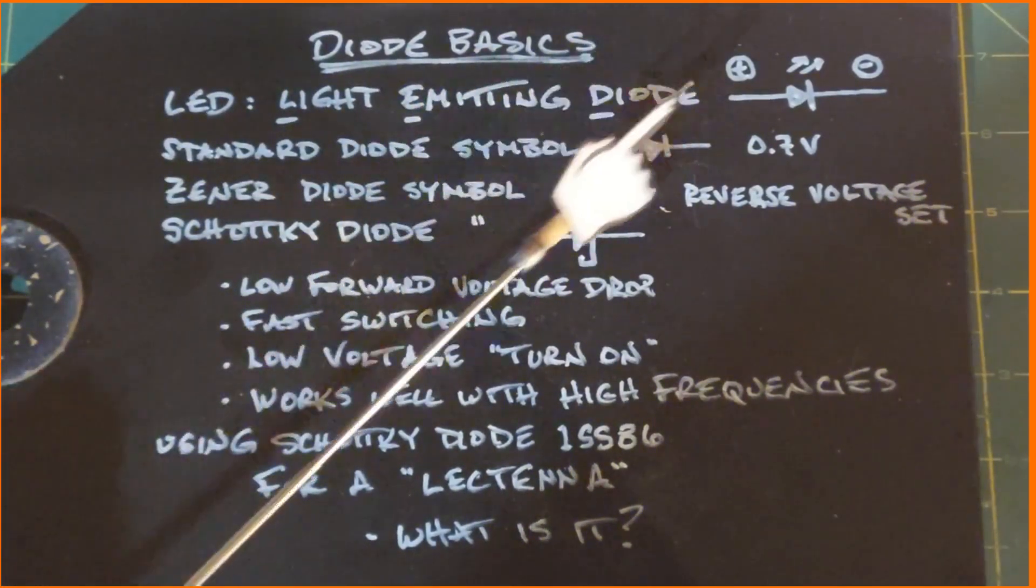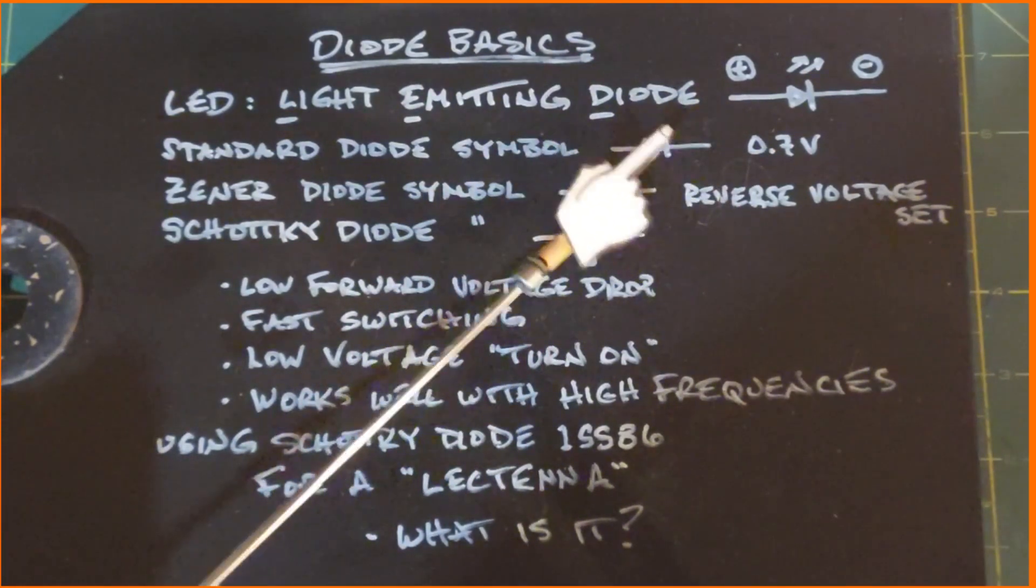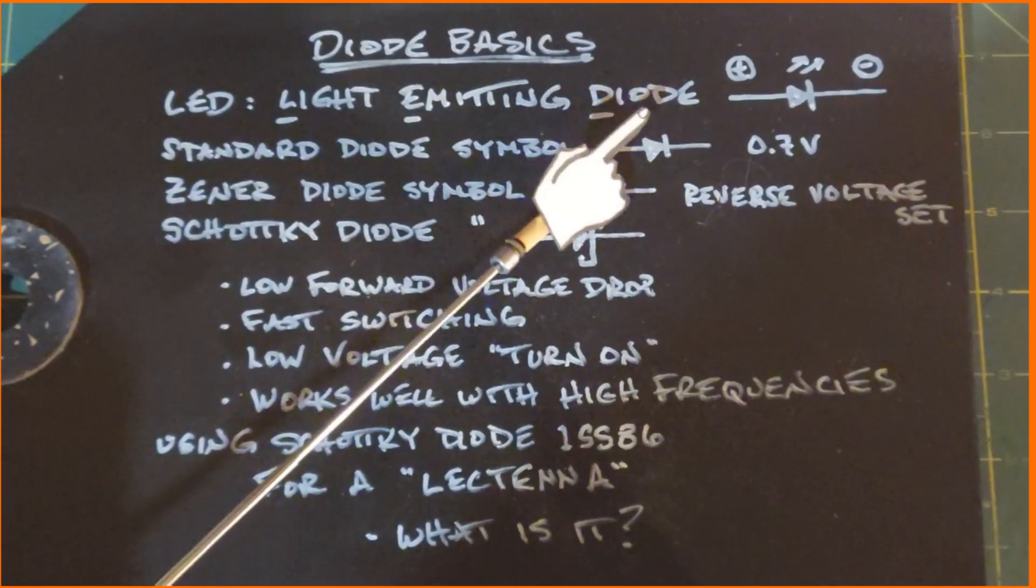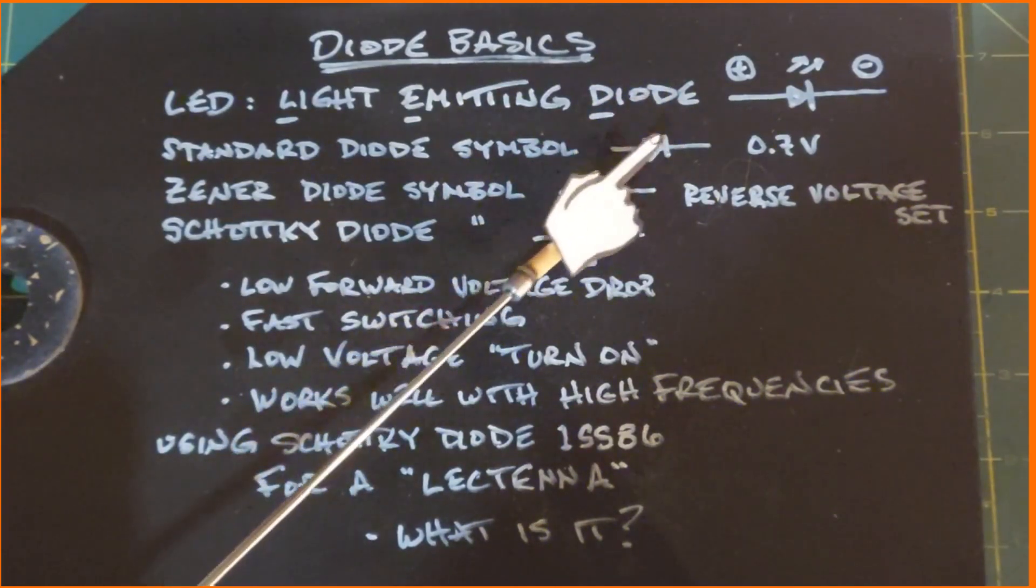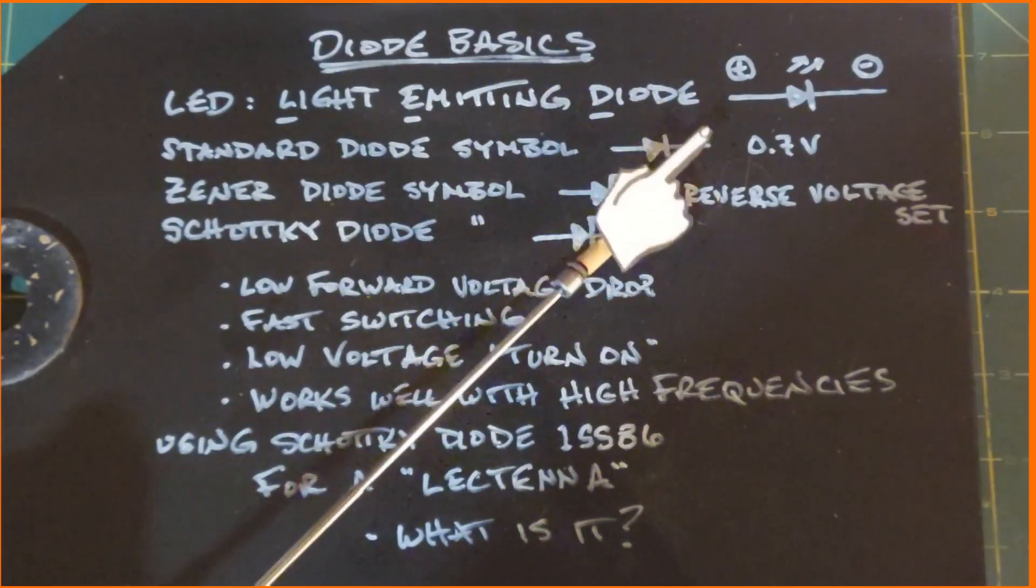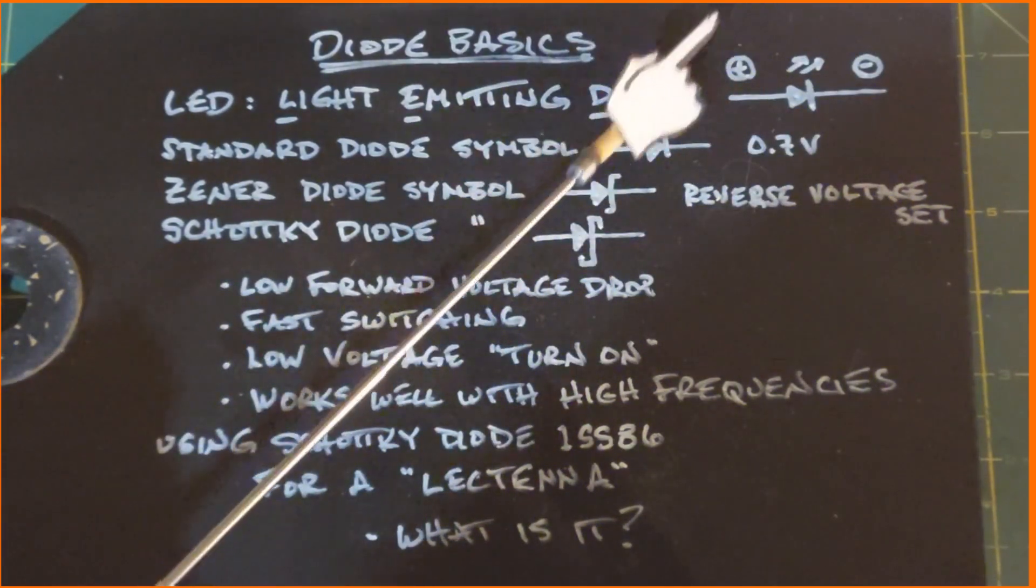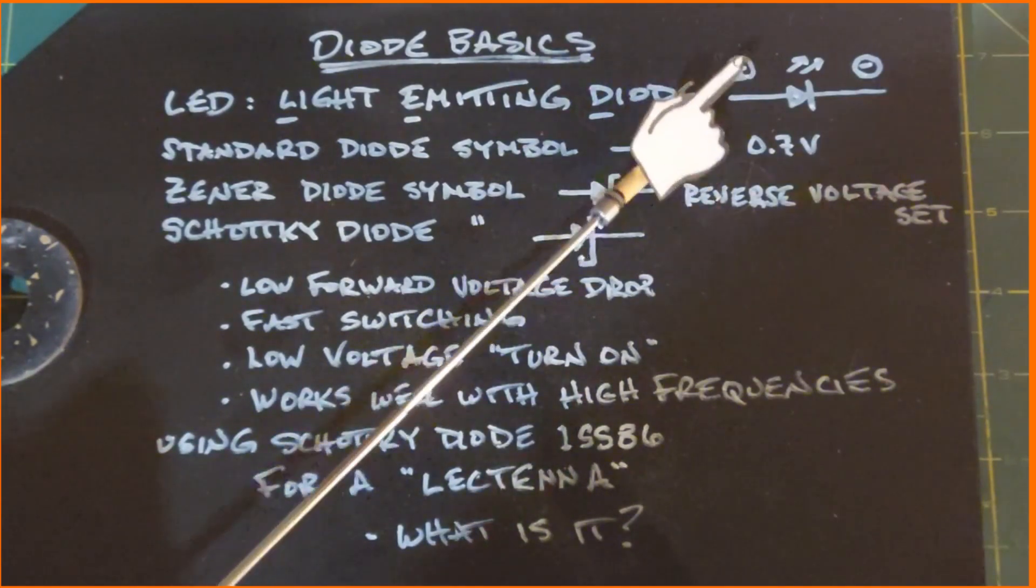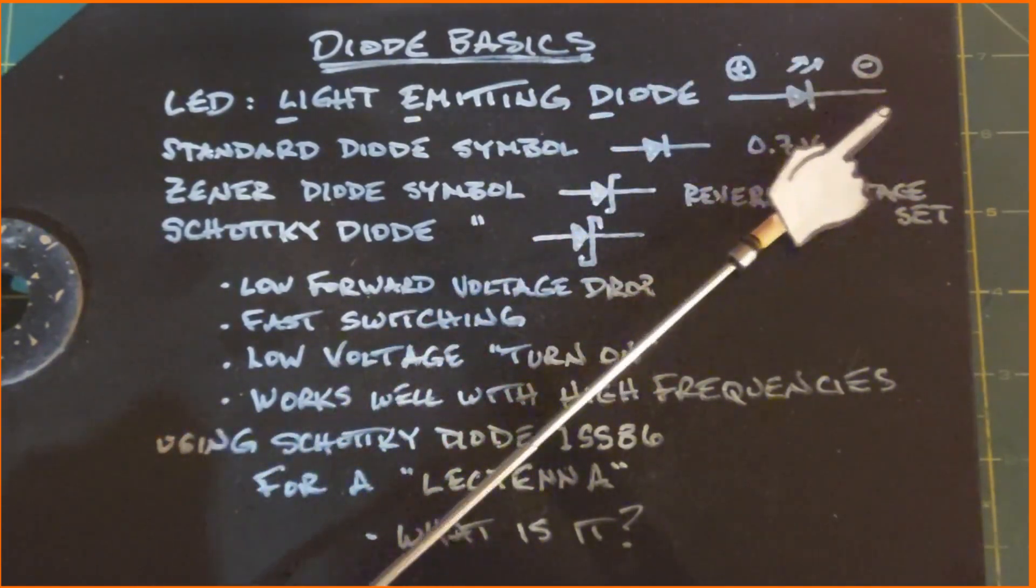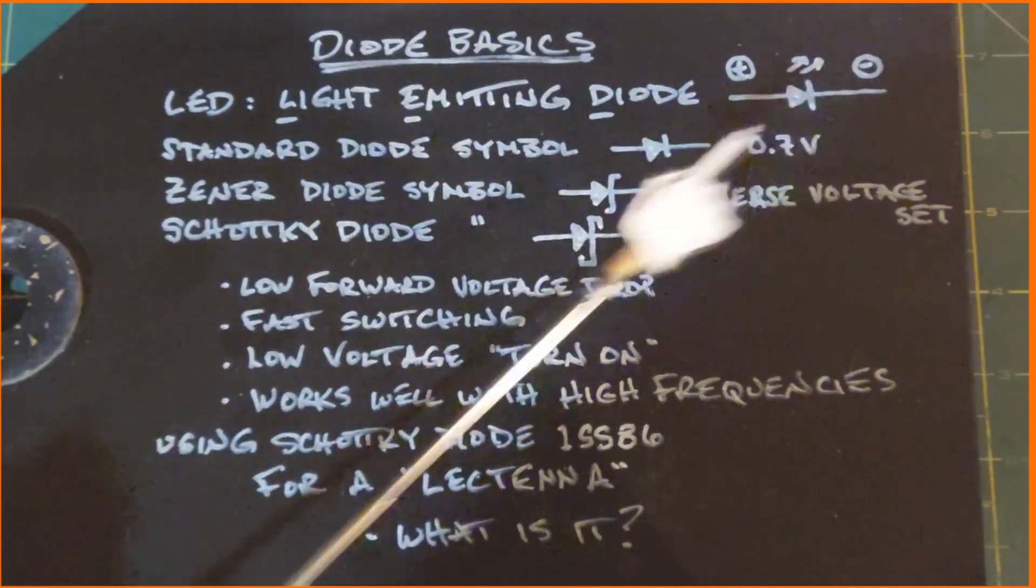A typical diode symbol looks like this if you saw it on a schematic - this is the wire part, this is a line up and down, and the triangle, that's the diode. The line up and down is always the negative side as I put up here, and the triangle part's always the positive side. So when you're putting it into a circuit you know which is positive and which is negative. Light emitting diodes add to the standard symbol here two arrows.